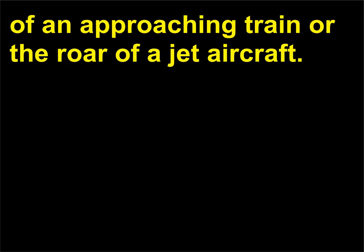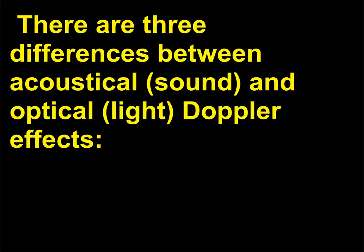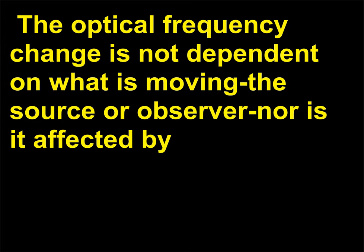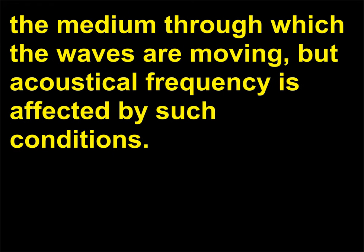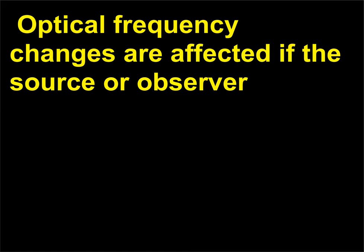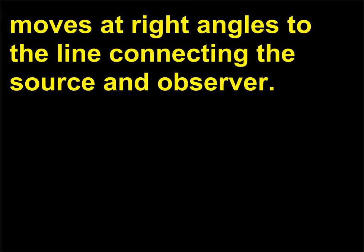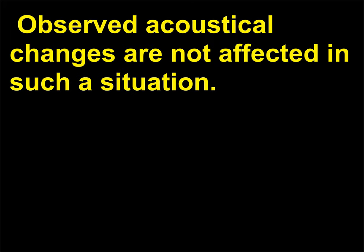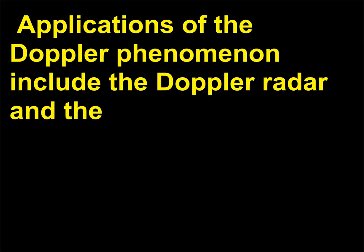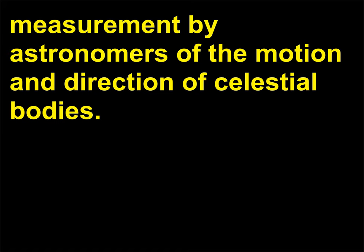There are three differences between acoustical (sound) and optical (light) Doppler effects. The optical frequency change is not dependent on what is moving — the source or observer — nor is it affected by the medium through which the waves are moving, but acoustical frequency is affected by such conditions. Optical frequency changes are affected if the source or observer moves at right angles to the line connecting the source and observer, while observed acoustical changes are not affected in such a situation. Applications of the Doppler phenomenon include Doppler radar and the measurement by astronomers of the motion and direction of celestial bodies.